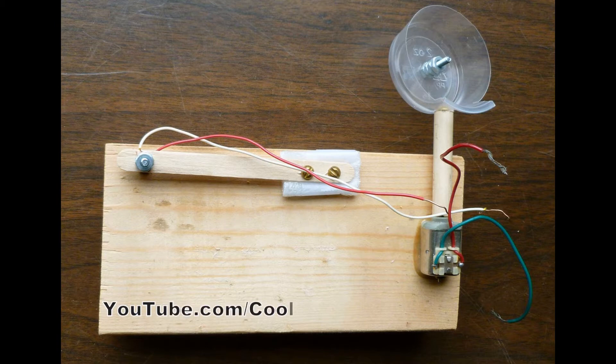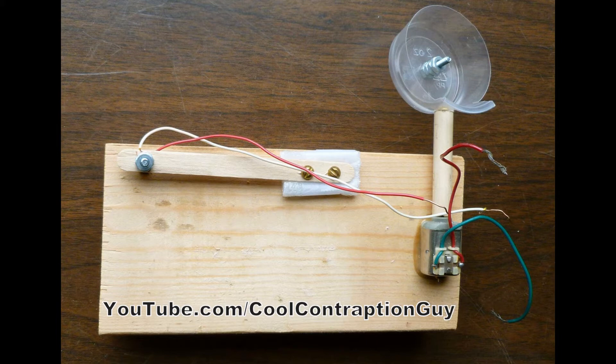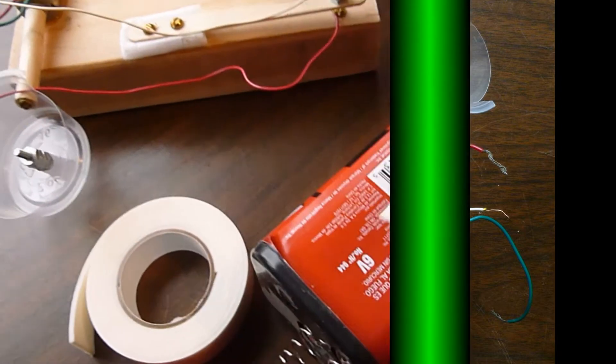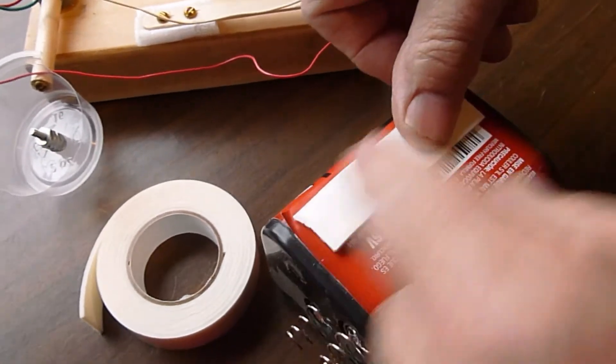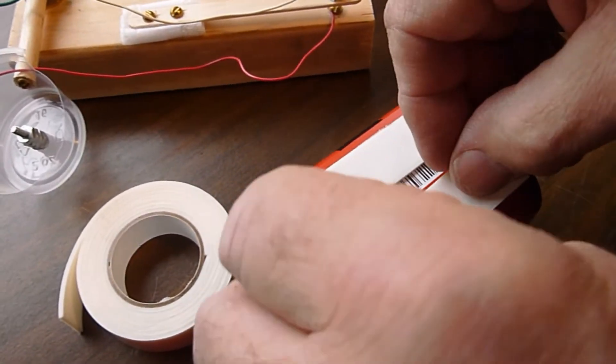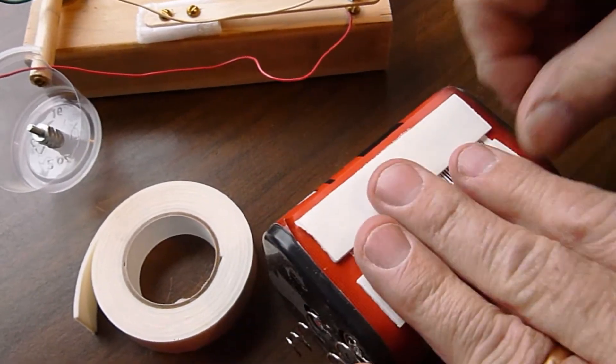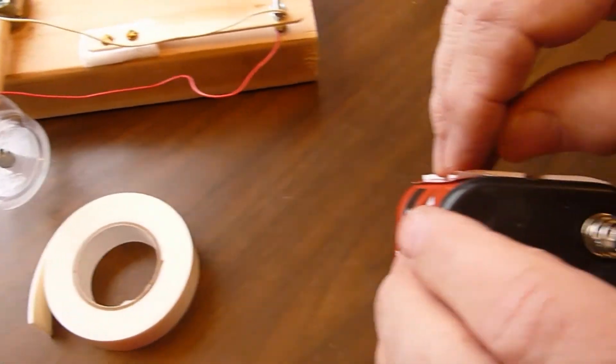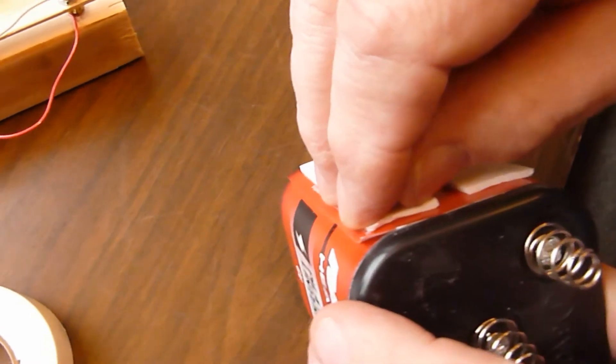The next step is to make the popsicle stick switch where indicated in this photo. To see how to make this switch, see the popsicle stick switch video on my channel www.youtube.com/coolcontraptionguy. The lantern battery is mounted to the baseboard with two short strips of double sided mounting tape.